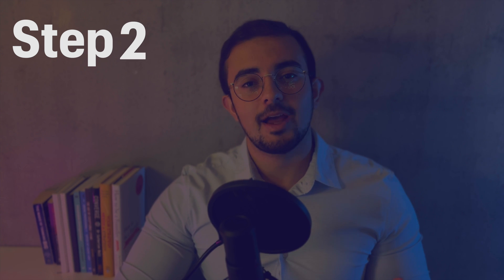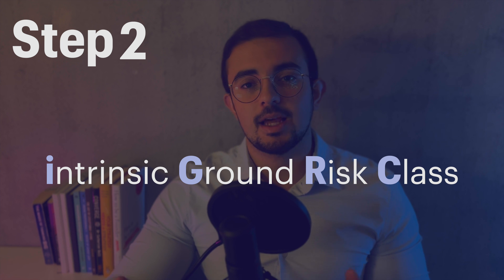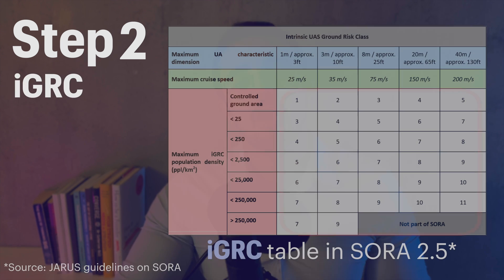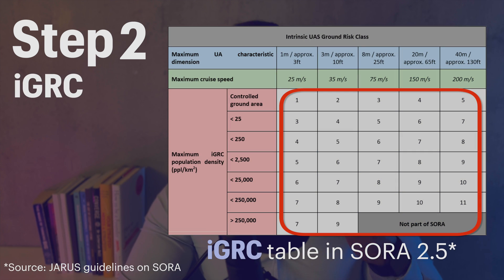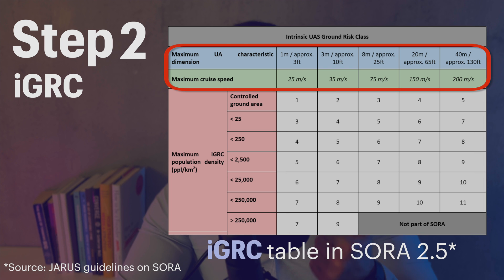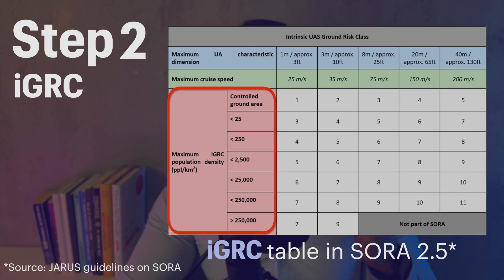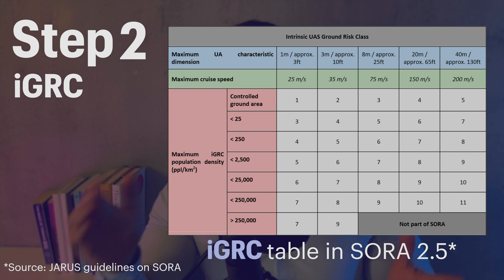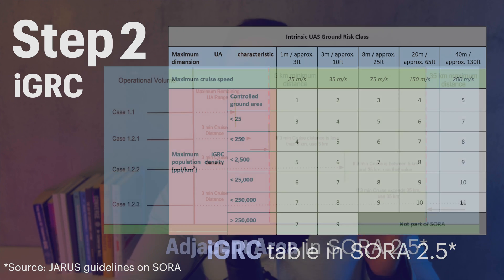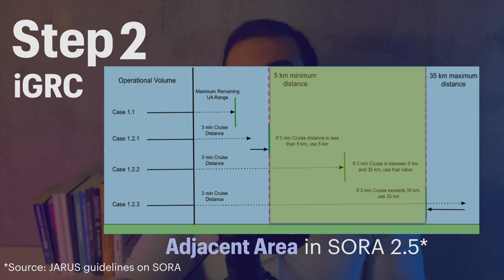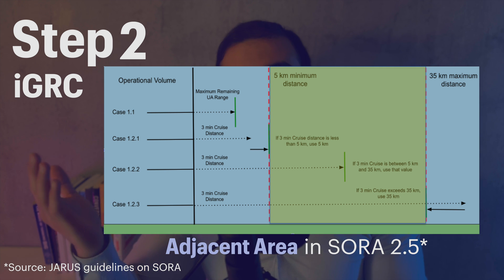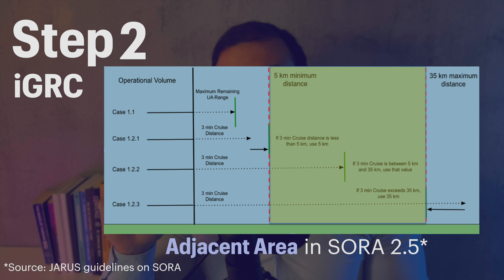Step 2 helps you identify your Intrinsic Ground Risk Class, or IGRC for short. There are 11 IGRC bands, which depend on two main factors: first, the speed and size of your aircraft, which dictate the impact upon collision, and second, the overflown population density. For that, you look not only at your operational area but also your adjacent area, which usually ranges between 5 and 35 km, depending on how far your drone can fly within 3 minutes.